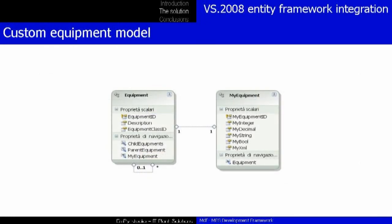Using the definition that the user developer has set, the custom class generator will generate a new class named MyEquipment with several properties: MyInteger of IntegerType, MyDecimal of DecimalType, MyString of StringType, MyBool of BooleanType, and MyXML of XMLType. Similarly, the custom class generator will create a table named CustomEquipment_MyEquipment with the following fields: MyInteger, MyDecimal, MyString, MyBool, and MyXML.